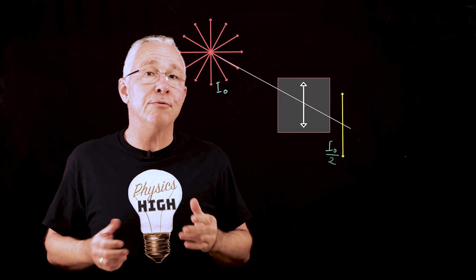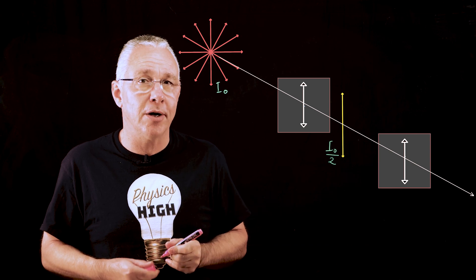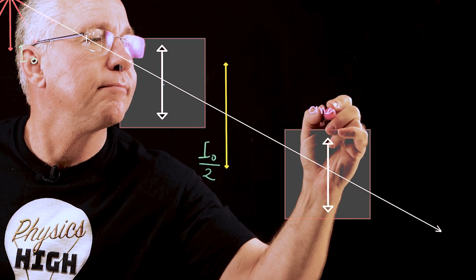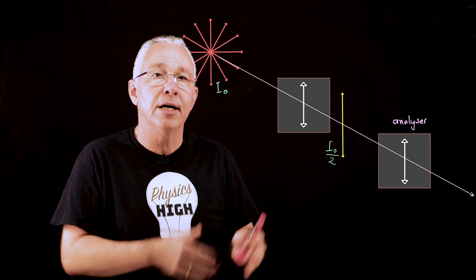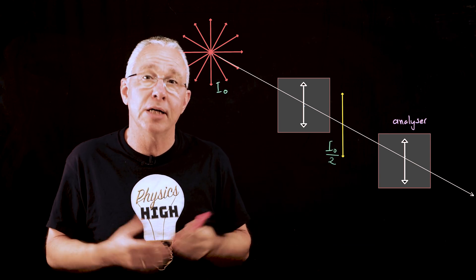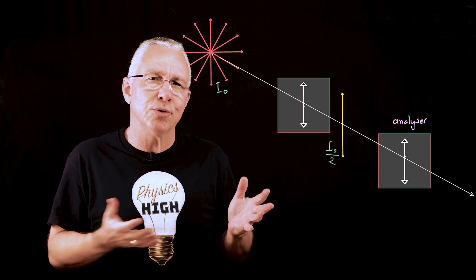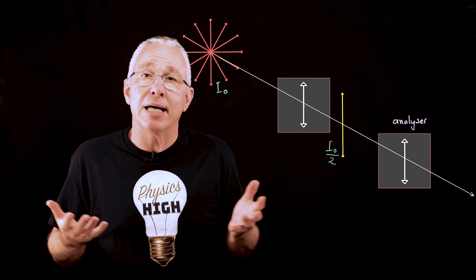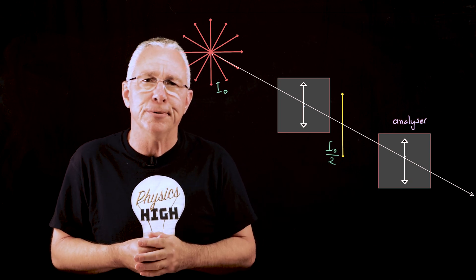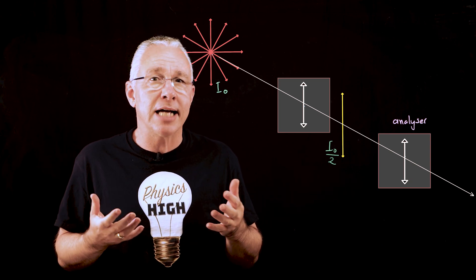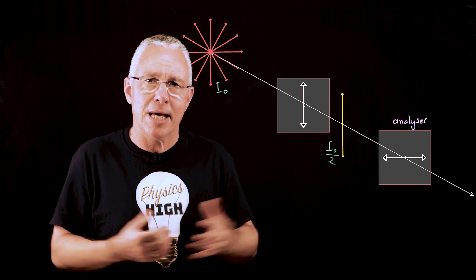Now what happens if we add a second polarizer? In this case we call this second polarizer the analyzer because it allows us to analyze the axis of polarization of the first filter with respect to the second filter or analyzer. Now if the analyzer's axis is parallel to the first filter then all light passes through with the same reduced intensity in other words I naught over two. If the analyzer's axis is perpendicular in this case horizontal then no light passes through.